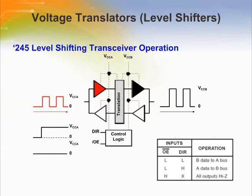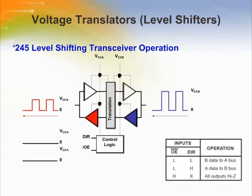This slide shows operation of a level shifting transceiver which has a directional control signal. The OE bar, or output enable signal, is used to enable or disable the transceiver. DIR is used to control the flow of data. When OE bar is low and DIR is high, data can be transmitted from the A side to the B side. Similarly, when OE bar is low and DIR is low, data can be transmitted from the B side to the A side.